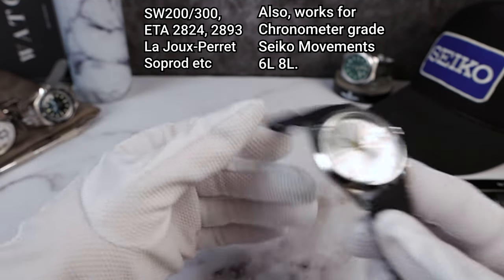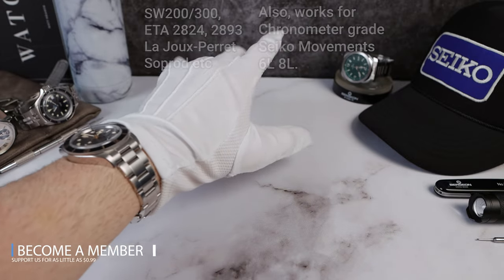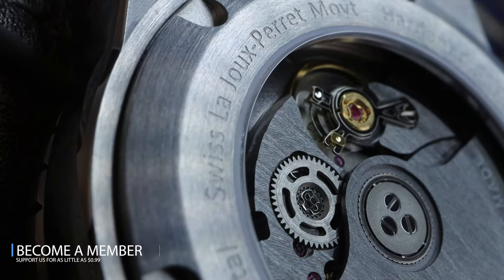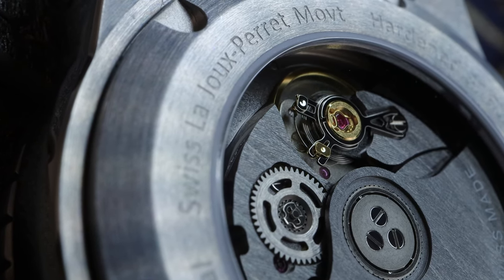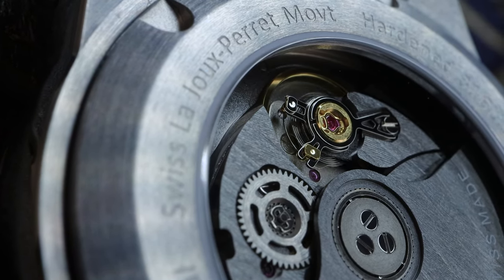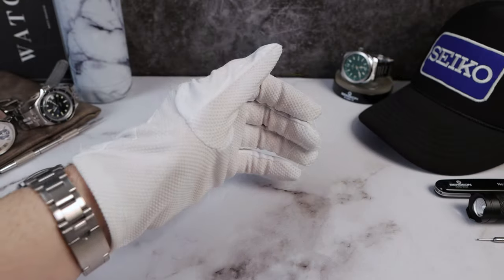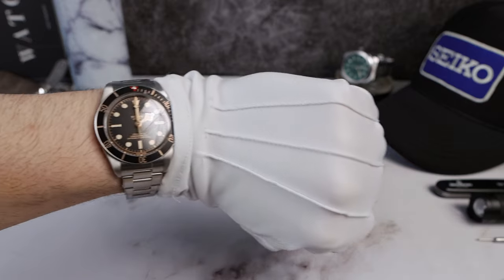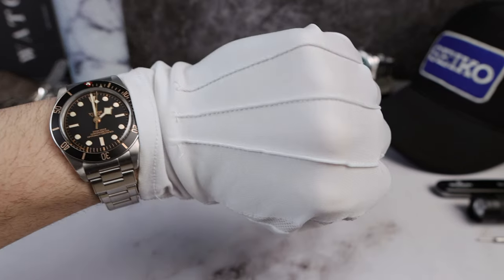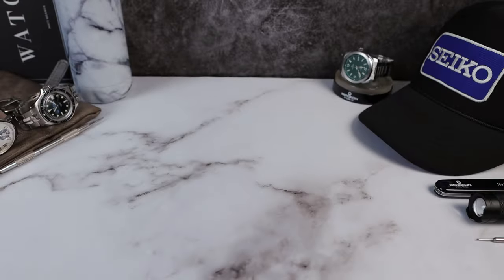So if you're not very active and you have an office job, you want to regulate towards the dial-up position more, so lean more towards that time grapher result. If you're more active, lean more towards 12 down. These are the main two positions of your watch. And I'm saying that from experience, I've tested this many times. Those two positions, if you just regulate to them, you're going to be happy.